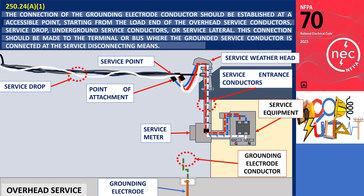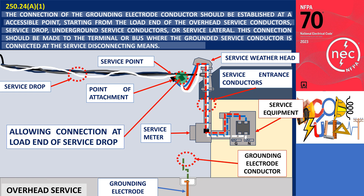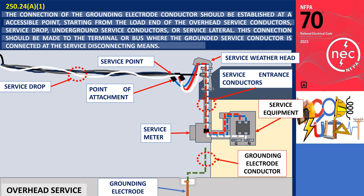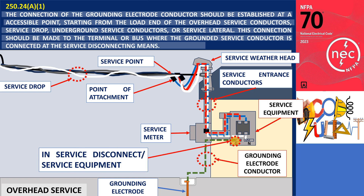In an overhead service installation, the grounding electrode conductor connection should be made at a convenient and accessible point — typically at the load end of the service drop or service conductors, which includes components such as the weatherhead, meter socket, or current transformer enclosure. However, the specific location may require approval from the authority having jurisdiction due to a utility seal on the metering enclosure. Alternatively, the connection can be made within the service equipment enclosure, which is the most commonly accepted location by AHJs.